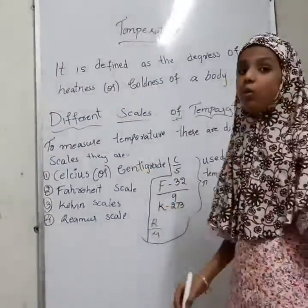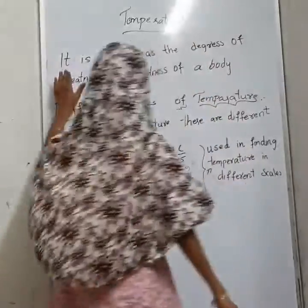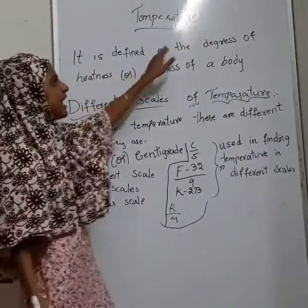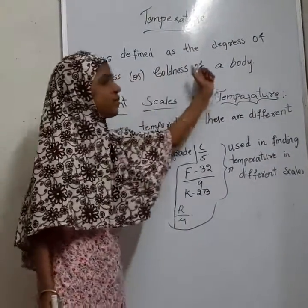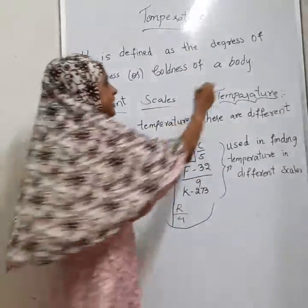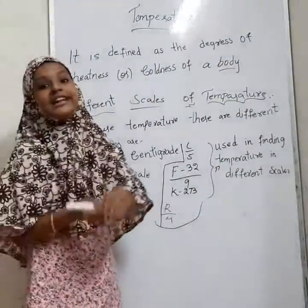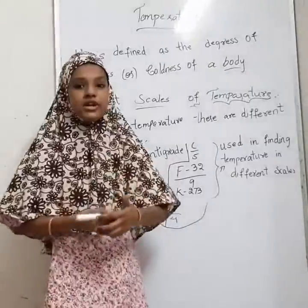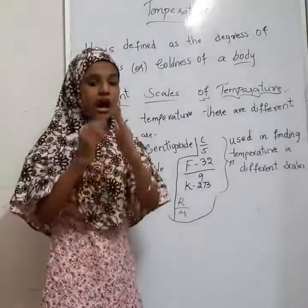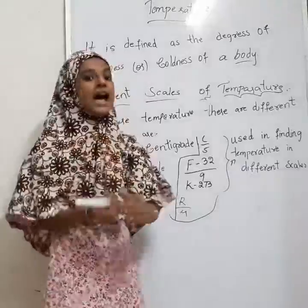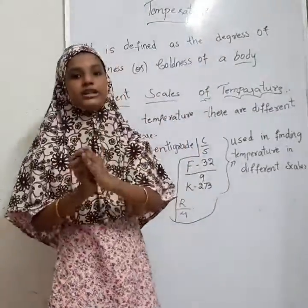First we can learn what is temperature and its definition. It is defined as the degree of heatness or coldness of a body. Here, body does not only mean human body — that can be any body. So you can say, it is defined as the degree of heatness or coldness of a body.